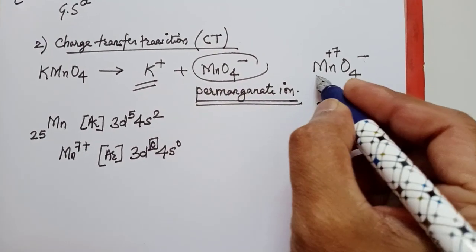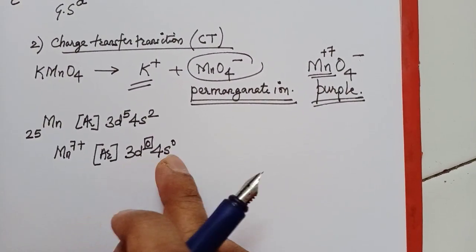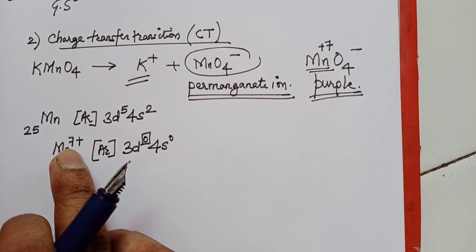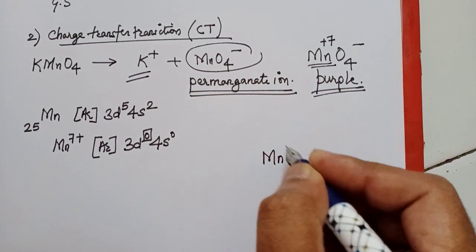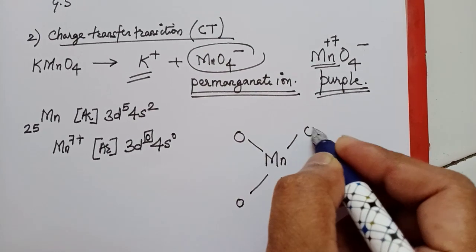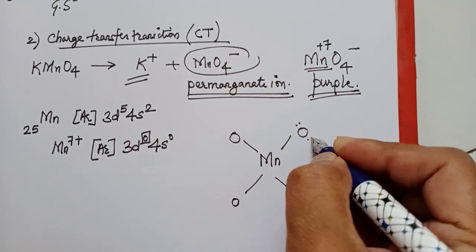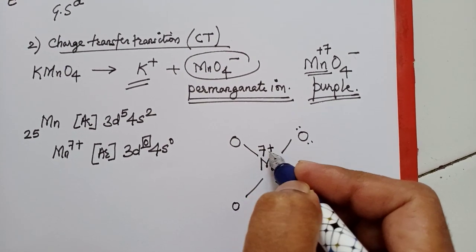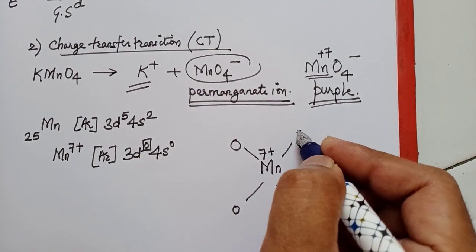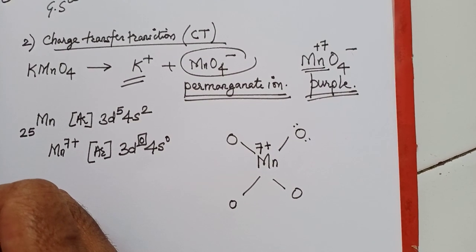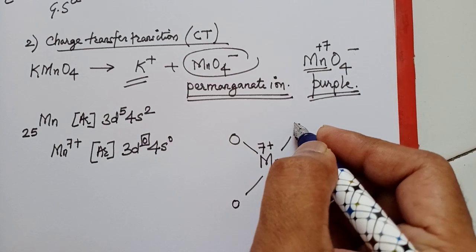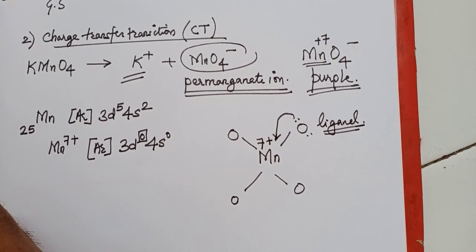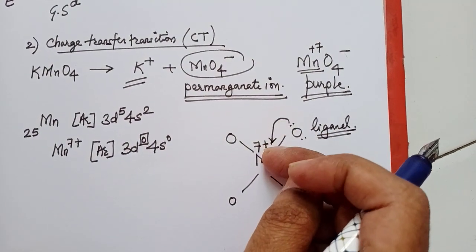The color arises because manganese in the +7 oxidation state has all its valence orbitals empty. With such a high positive charge, it exerts a strong attraction for electrons. In the permanganate ion, manganese is surrounded by four oxygen atoms which have lone pairs. The strong +7 charge on manganese pulls these electrons of oxygen very close to itself, and it is possible that for a fraction of time an electron gets transferred from oxygen — the ligand — to the metal. This is a ligand-to-metal charge transfer (LMCT) transition.